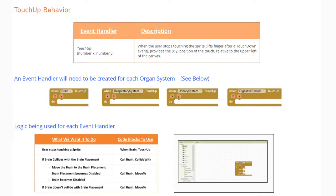The event handler we're going to use is called touch up, and we'll be using coordinates on the X and Y axis to get this event handler to work correctly. The touch up behavior triggers when the user stops touching the sprite or lifts their finger after the touchdown event. This provides us with the X, Y position of the touch relative to the upper left-hand corner of your canvas. When we remove our finger from that sprite, we get whatever coordinates it is at that given time.